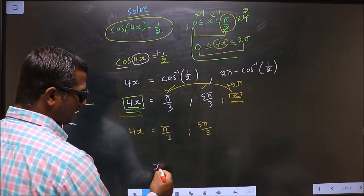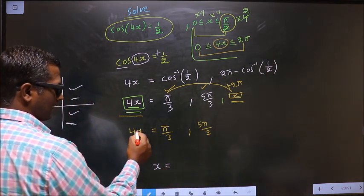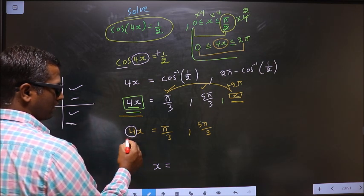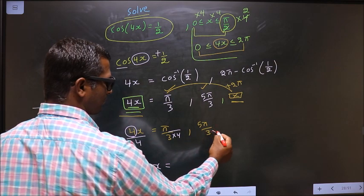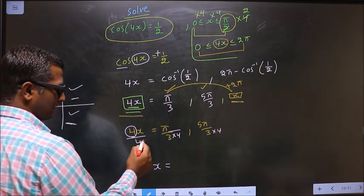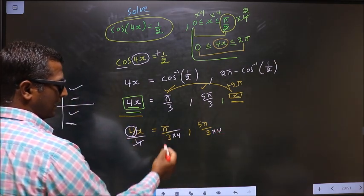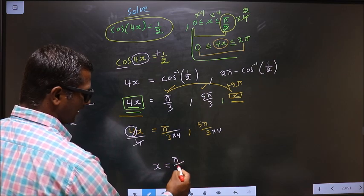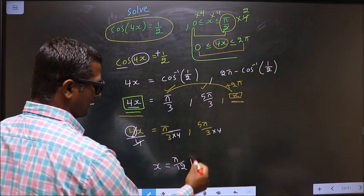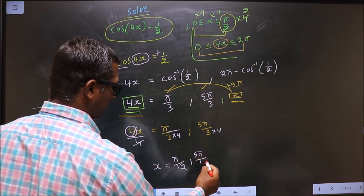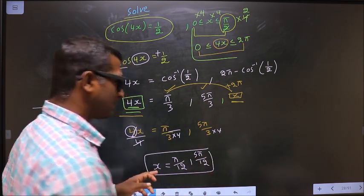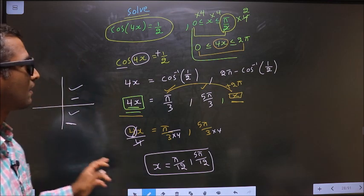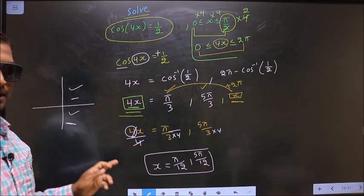Now to get the values for x, I should remove the 4. To remove the 4, I divide by 4 everywhere. So here it cancels out, I get x equals: here it is π/12 and here it is 5π/12. This is our answer. Am I clear?